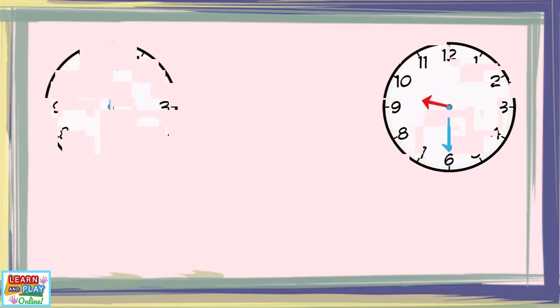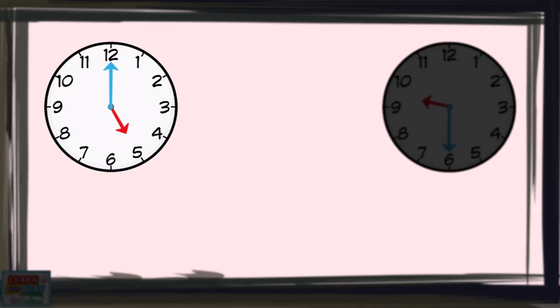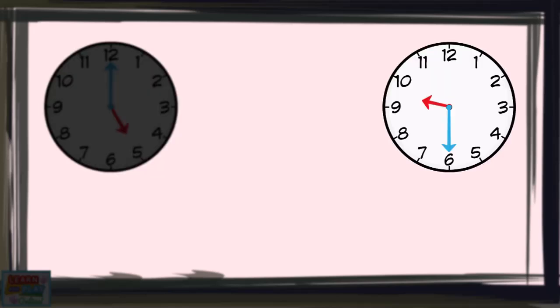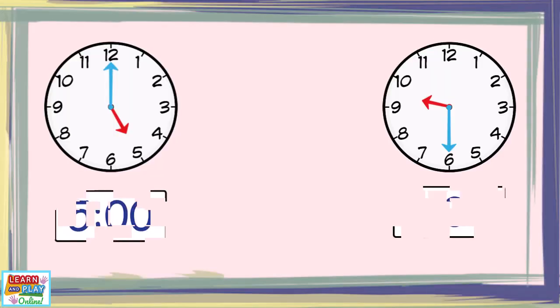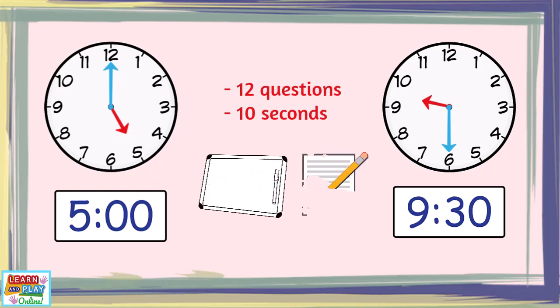In this quiz, you will be shown a time on an analogue clock. It may be an O'clock time or a half-past time. Your job is to tell the time in the digital form. There will be a total of 12 questions to answer and you will get 10 seconds for each question. Record your answers on a whiteboard or a piece of paper.